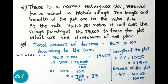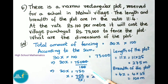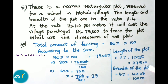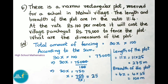Solving: 30x = 75,000 ÷ 100 = 750, so x = 750 ÷ 30 = 25. Therefore the length of the plot is 11x = 11 × 25 = 275 meters, and the breadth is 4x = 4 × 25 = 100 meters. Today we have seen Class 8 Chapter 2 Exercise 2.4, questions 4 to 6.